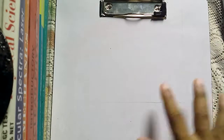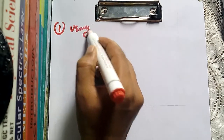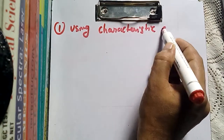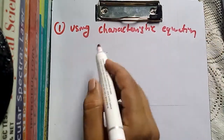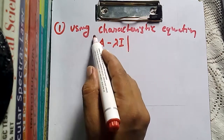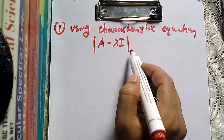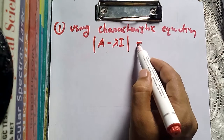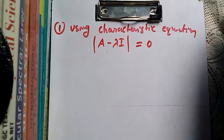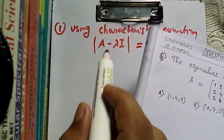The first method is finding eigenvalues using the characteristic equation. The characteristic equation is: the determinant of (A minus lambda I) equals zero, where I is the identity matrix. A is the given matrix — since our problem names the matrix A, that's what we use.